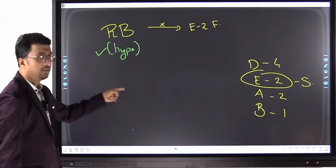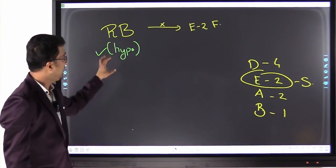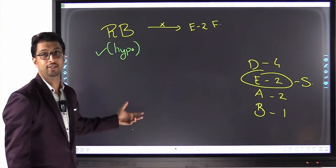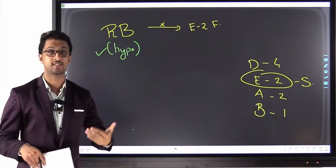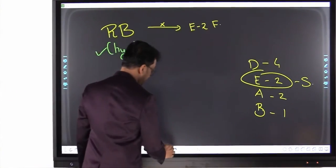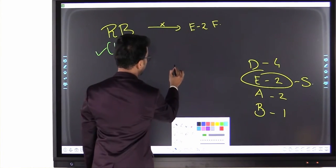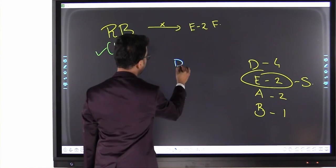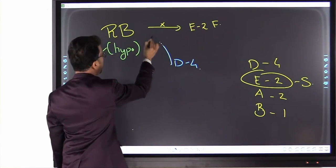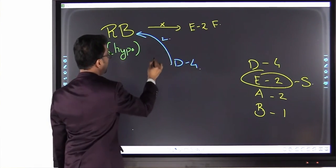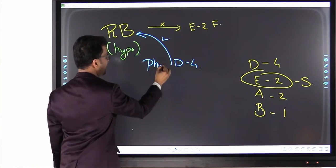Now how can this be inactivated? Because this is an inhibitor. So it has to be inactivated for the cell cycle to continue. Who comes and inactivates it? Cyclin D and 4 comes and activates it. That is, what it does is, it phosphorylates it.